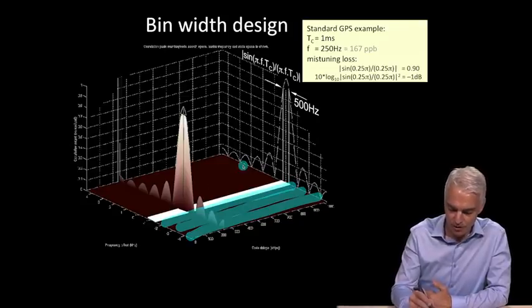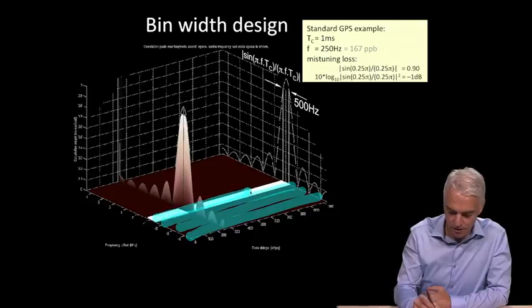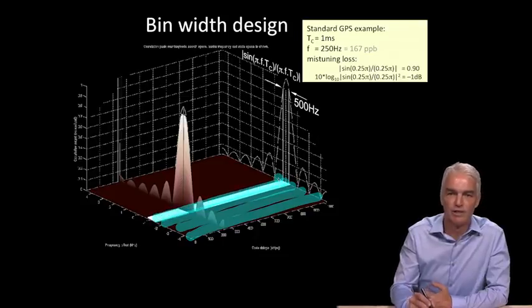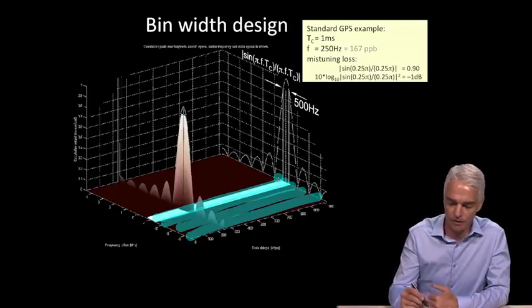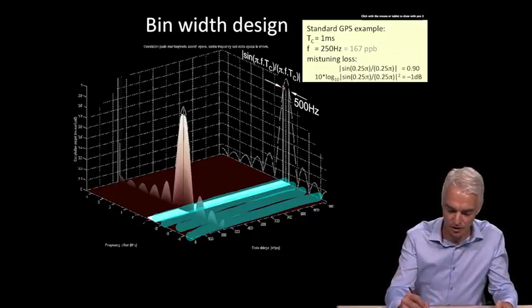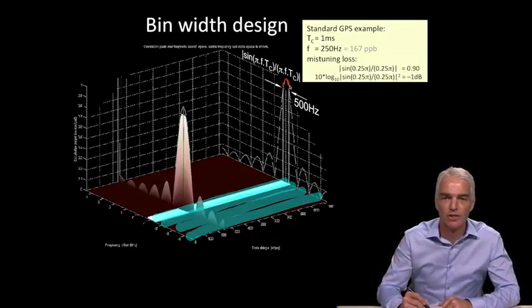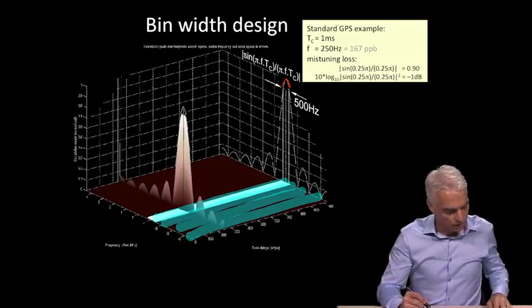When you finally do come across the signal, wherever the signal is in this particular bin, the peak can't be more than 1 dB away, because of that analysis we just did. These are nice numbers, 1 millisecond and plus or minus 250 Hz.